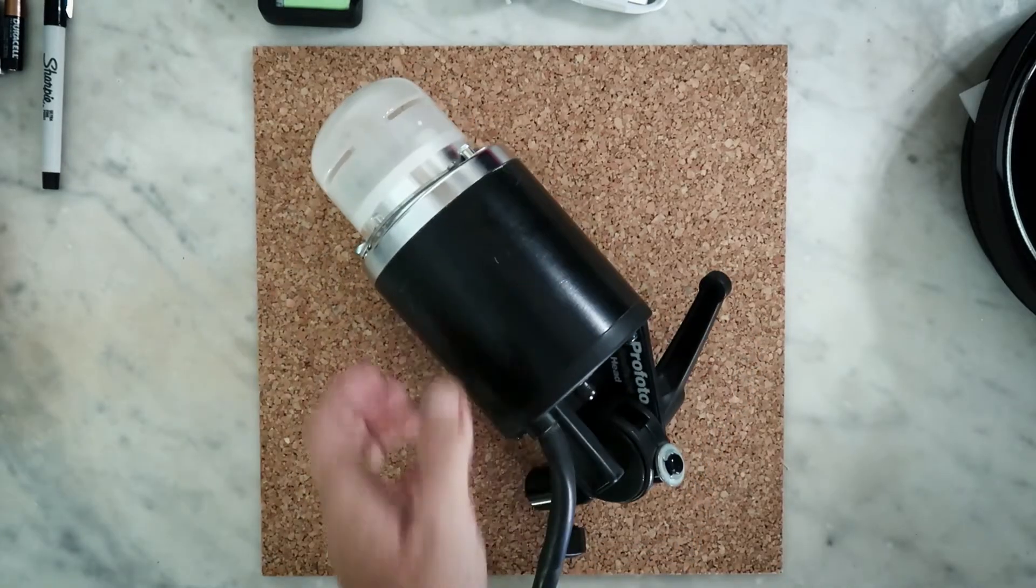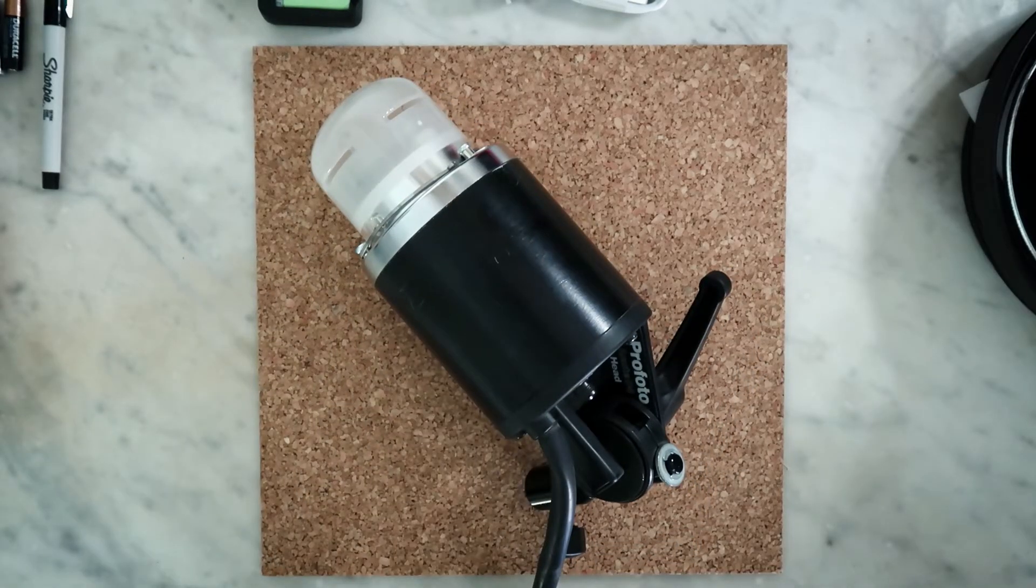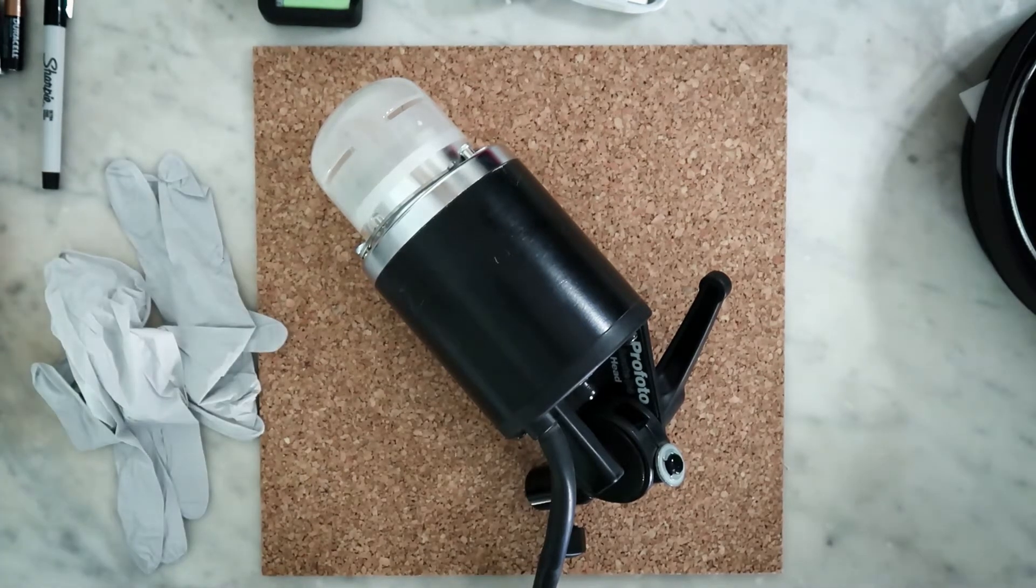Step one, start with a soft surface because these parts are fragile and they're a little expensive. You also need some gloves and a spare flash tube.